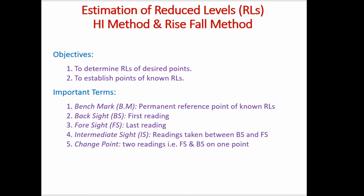There are two objectives of leveling: to determine reduced levels of desired points, and to establish points of known reduced levels. Some important terms are: benchmark, which is the permanent reference point of a known reduced level; backsight, which is the first reading we take on the benchmark; foresight, which is the last reading; and intermediate sight, which are the readings taken between backsight and foresight. Change point is also very important — it is the point where we take two readings, both foresight and backsight, on one particular point.